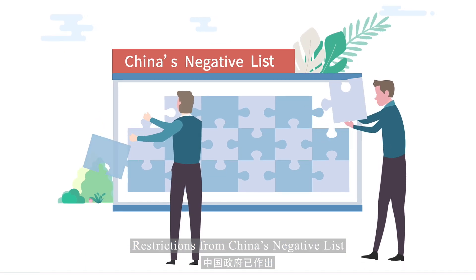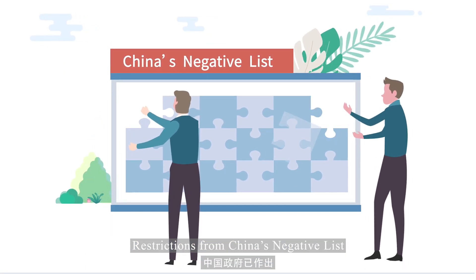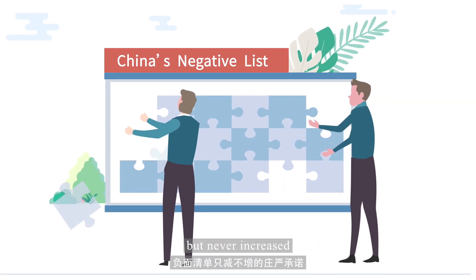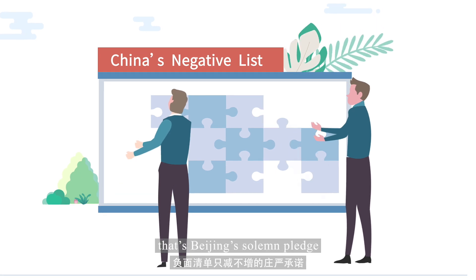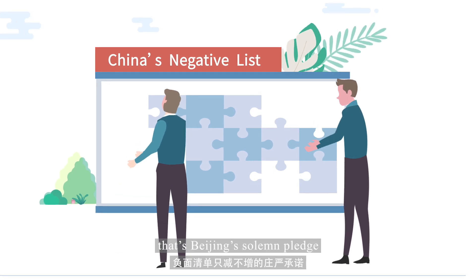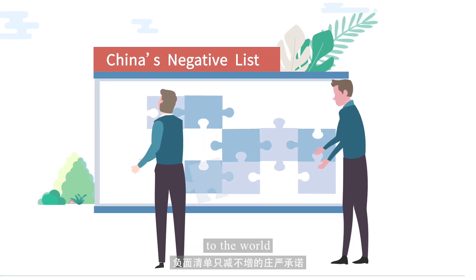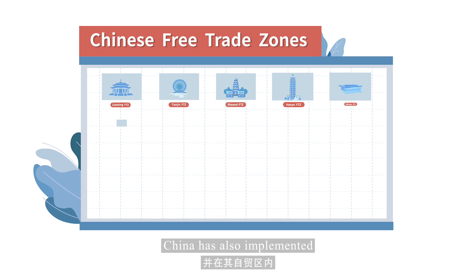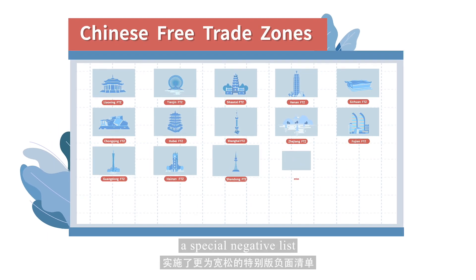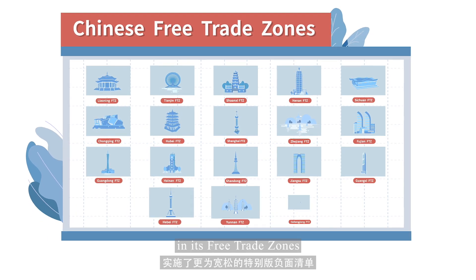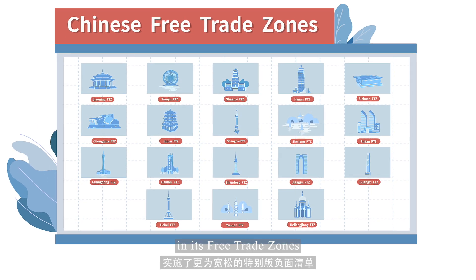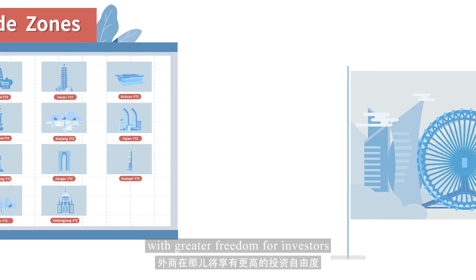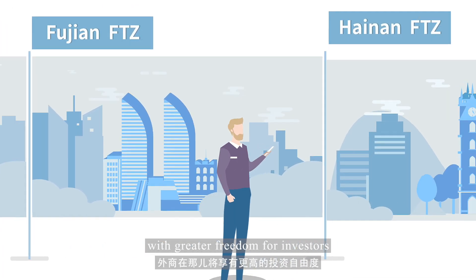Restrictions from China's negative list will only be reduced, but never increased. That's Beijing's solemn pledge to the world. China has also implemented a special negative list in its free trade zones, with greater freedom for investors.